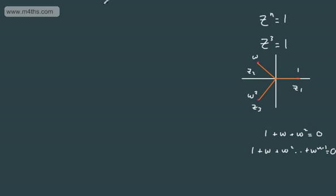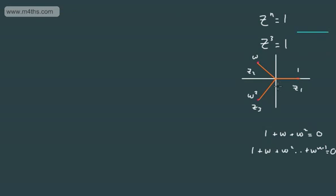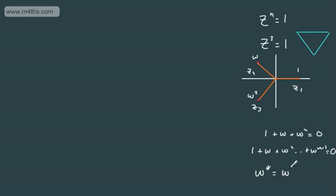We can show that sum equals zero by looking at vectors. Taking vectors from 0, going out to each root, and placing them tip to tail, we end up back at 0. Another interesting property is that two of the roots are complex conjugate pairs, so we can say ω* (the conjugate of ω) equals ω².